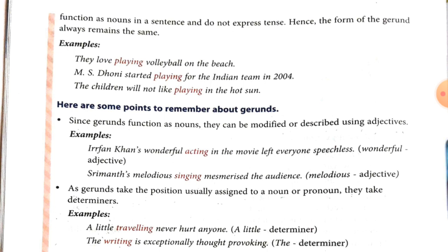For example: They love playing volleyball on the beach. M.S. Dhoni started playing for the Indian team in 2004. The children will not like playing in the hot sun. Now, some points to remember about gerunds. First, since gerunds function as nouns, they can be modified or described using adjectives. For example, Irrfan Khan's wonderful acting — which acting? Wonderful acting. Here wonderful is the adjective and acting is the noun.